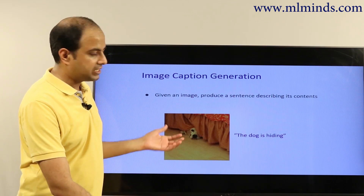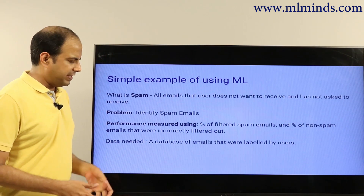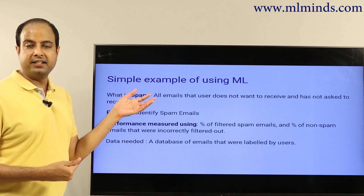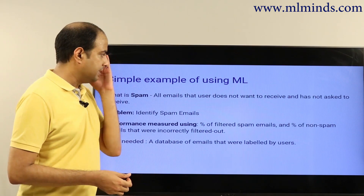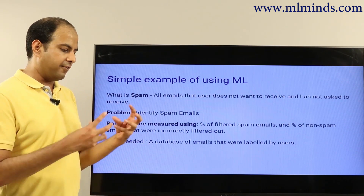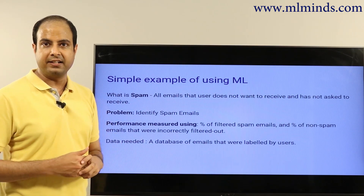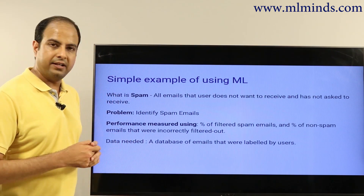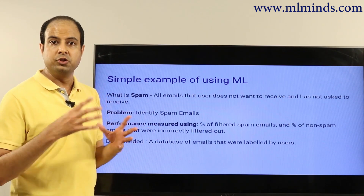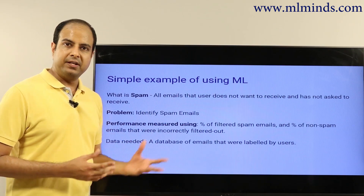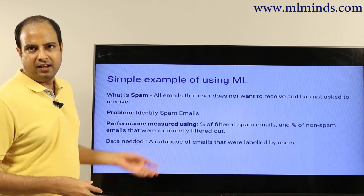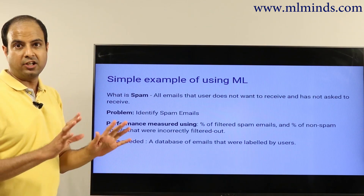A simple and concrete example of machine learning is the spam classifier that sits in all of our inboxes. If you use Gmail or any other email provider, they all have a spam classifier module. Whenever an email arrives, the spam classifier runs on it and tries to figure out whether it is spam or a useful email. If it is spam, it puts it in the spam or junk folder.